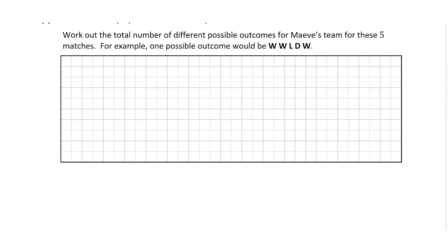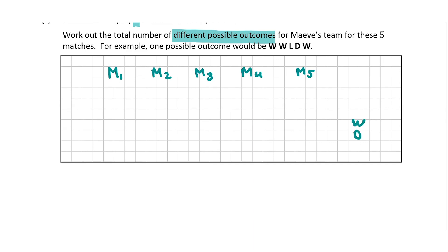In question C, Maeve's team play five matches in a competition. We're asked to work out the total number of different possible outcomes for these five matches. One possible outcome given as an example is win, win, lose, draw, win. So M1 through M5 — each match can result in a win, draw, or lose, so there are three possible outcomes for each match.